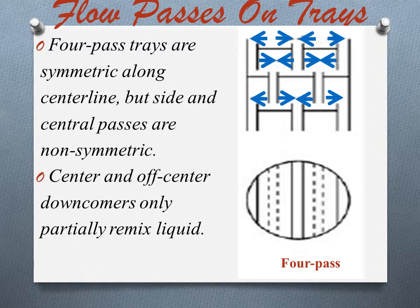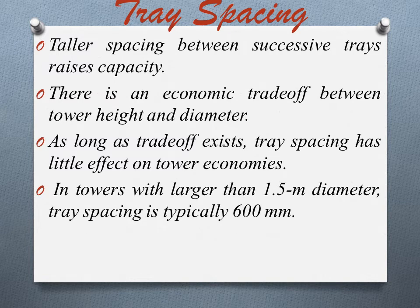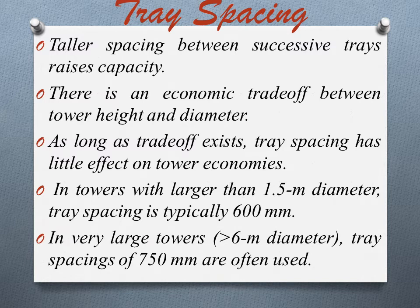Now we will discuss tray spacing. Taller spacing between successive trays raises capacity leading to a smaller tower diameter, but also raises tower height. There is an economic trade-off between tower height and diameter. As long as the trade-off exists, tray spacing has little effect on tower economics and is said to provide adequate access. In towers larger than 1.5 meter diameter, tray spacing is typically 600 millimeter, which is large enough to permit a worker to crawl between trays.